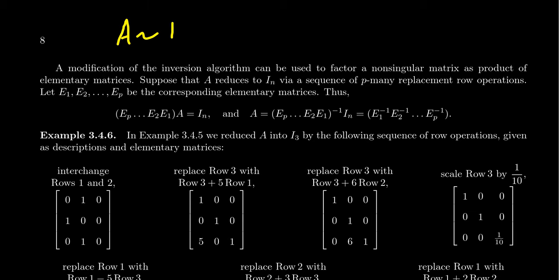Performing an elementary row operation is equivalent to multiplying by an elementary matrix on the left. So if we do row operations 1, 2, 3, all the way up to P, we can factor the identity matrix as follows: multiplying A by E1 does the first operation, E2 does the second, all the way up to EP which does the last. So we have this product of elementary matrices multiplied by A equal to the identity.